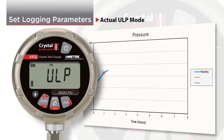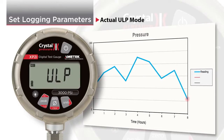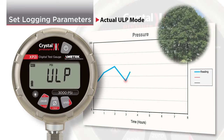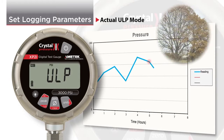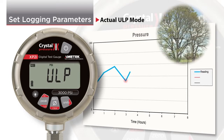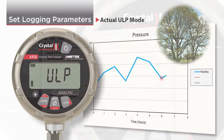Actual ULP stands for actual ultra-low power mode. Actual ULP records the actual pressure being measured at every logging interval, just like actual mode. But in addition, ultra-low power mode maximizes the battery life of your XP2i, allowing you to record continuously for up to one year on one set of batteries.